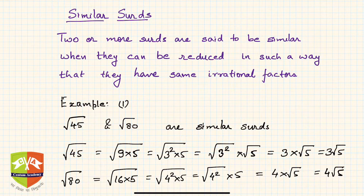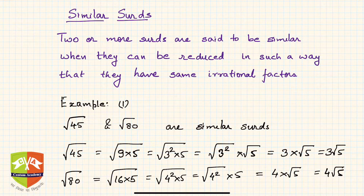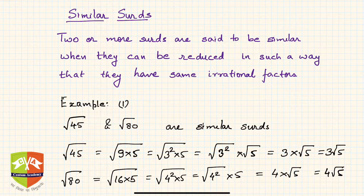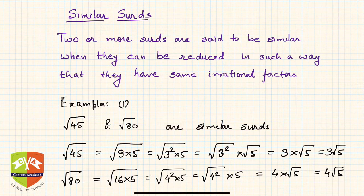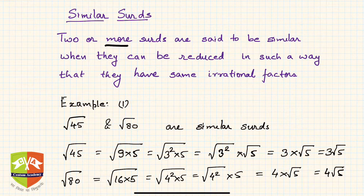Hello folks, welcome again. In the last session we studied what SIRDs are and how to express SIRDs as a product of a rational and an irrational part, and vice versa. Now we are going to understand one more important topic called similar SIRDs. Similar SIRDs are two or more SIRDs — you have to have multiple SIRDs to compare so that you can talk about similarity.